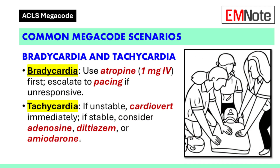Common Megacode scenario — Bradycardia and tachycardia: For bradycardia, administer atropine intravenously at a dose of 1 mg first. If the patient remains unresponsive, escalate to pacing. For tachycardia, if the patient is unstable, cardiovert immediately. If the patient is stable, consider adenosine or amiodarone based on the clinical context.